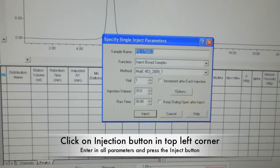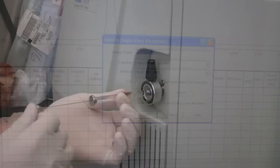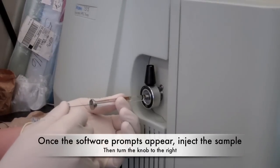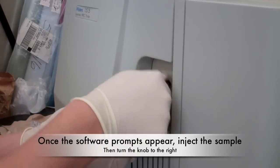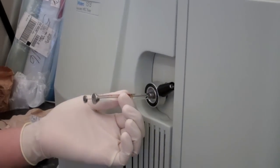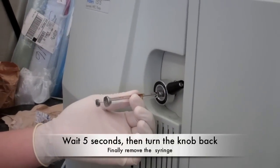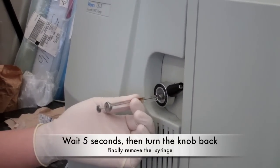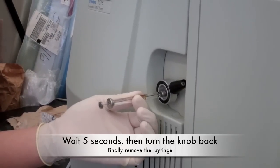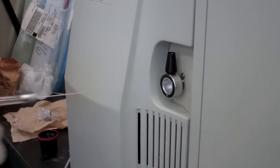Click on the injection button in the software and wait for instructions. Once the instructions appear, slowly depress the syringe to inject the sample, then turn the knob to the right and wait 5 seconds. After 5 seconds, turn the knob back to the left. Carefully remove the syringe.